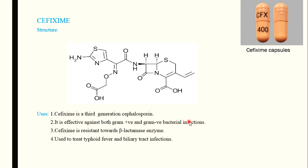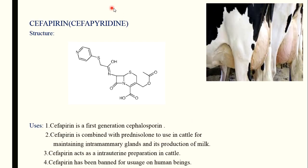As already mentioned, first and second generation cephalosporins act only on gram-positive bacterial infections, while third generation acts on both gram-positive and gram-negative infections. Cefixime is one of the effective drugs that also acts on gram-negative bacteria. Cefixime is resistant to the beta-lactamase enzyme — a beta-lactamase enzyme produced by certain bacteria can break the cepham or beta-lactam ring. Cefixime is also used to treat typhoid fever and biliary tract infections.